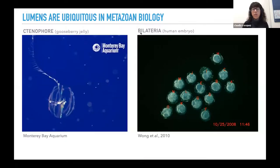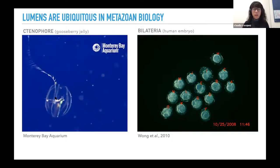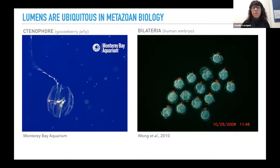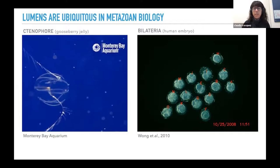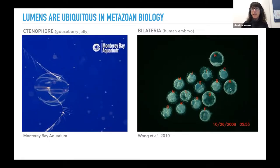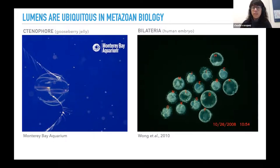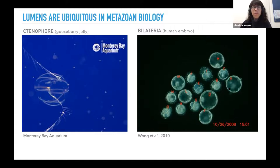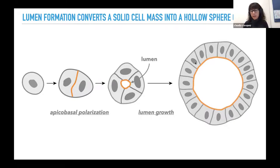Lumens are ubiquitous throughout metazoan biology. As humans, we're full of lumens. Even the most ancient animals, like these comb jellies, have a lumen — they have a gut right through the middle that allows them to eat and secrete waste. As humans develop, the very first separation of embryonic and extra-embryonic tissue is separated by a lumen. In this example of forming the blastocyst lumen, the process is actually relatively violent — you can see it contracting and expanding, sometimes breaking the tissue itself. Growth of this lumen is generated by a constant accumulation of pressure. Because of the prevalence of lumens throughout all of our physiology — we're just kind of a series of tubes and lumens — people have studied how lumens form.